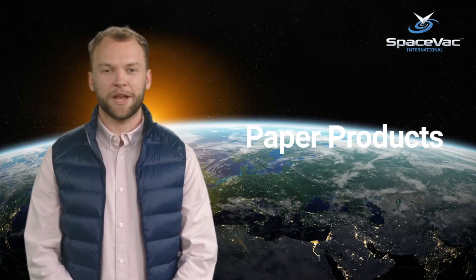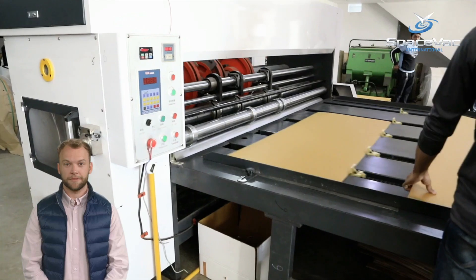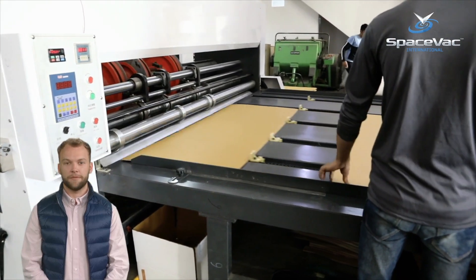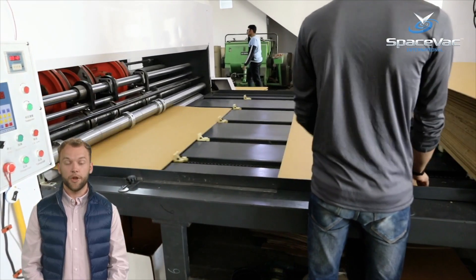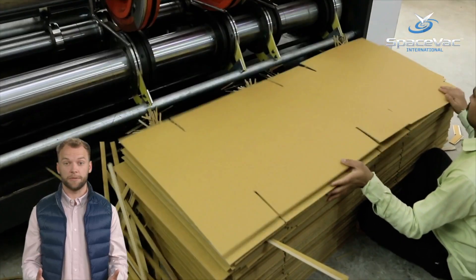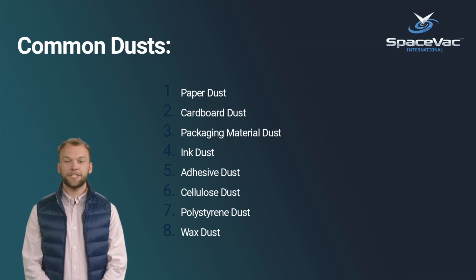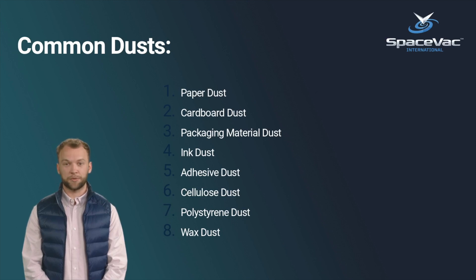One other sector where ATEX zones are commonly found is within the paper and card industries. The creation, recycling, processing, and forming of paper and card products for the packaging and print industries all utilize and generate a lot of combustible products and waste materials. Dusts from the paper itself, along with glue and other finishing products used in the manufacture of paper and card products, present a range of hazards to operators working in the area.